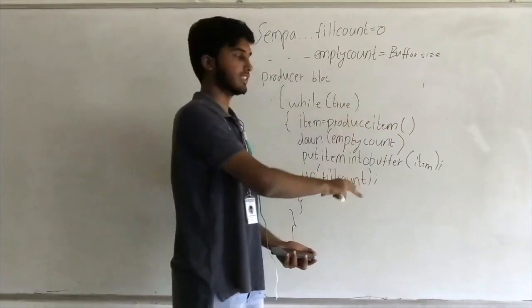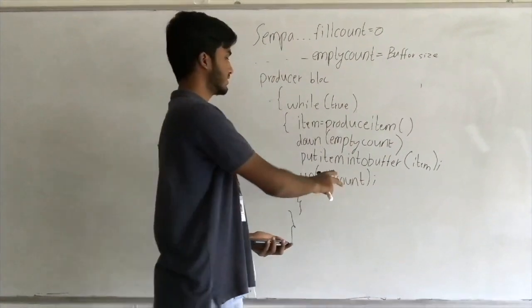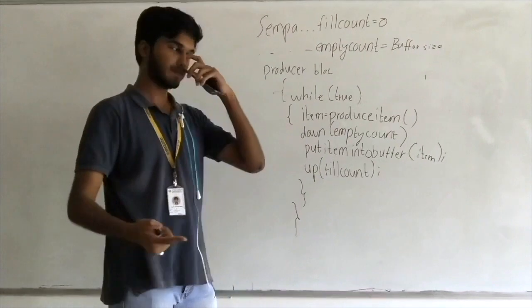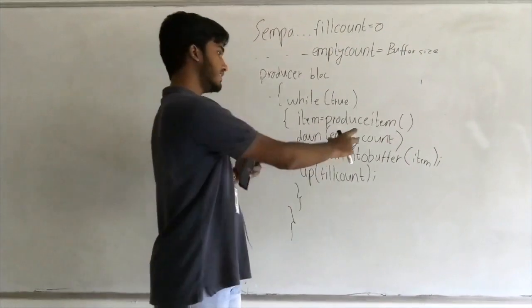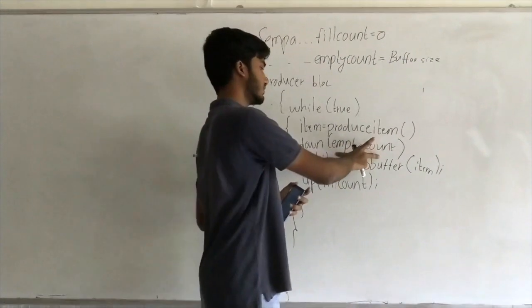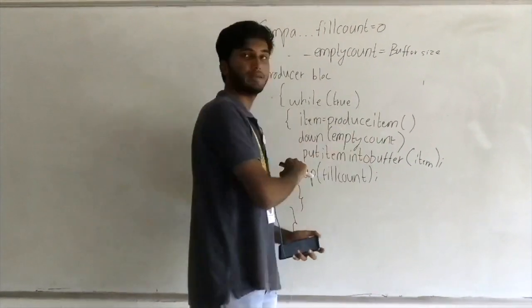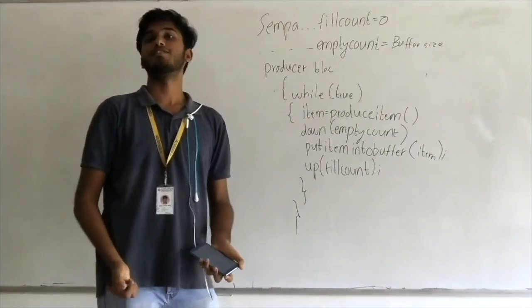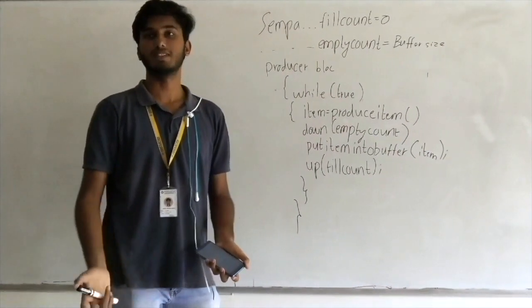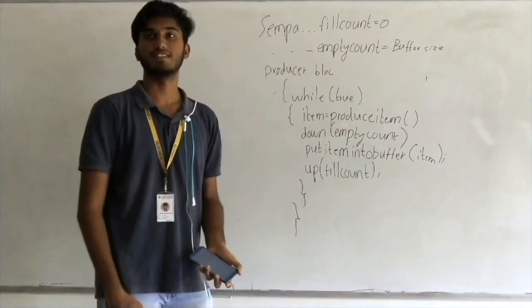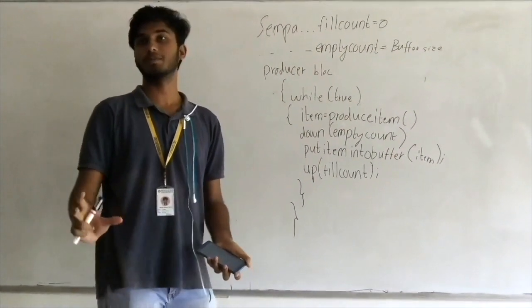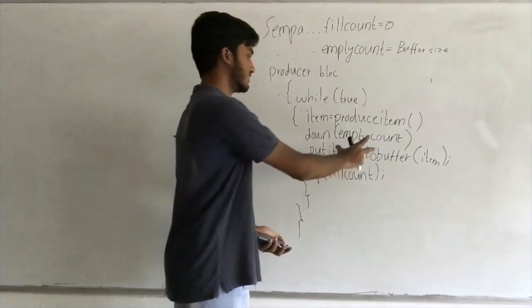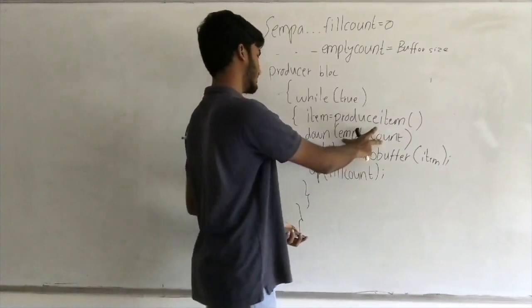When the producer produces an item, the empty count is decremented by one because one empty space becomes occupied by the new item.